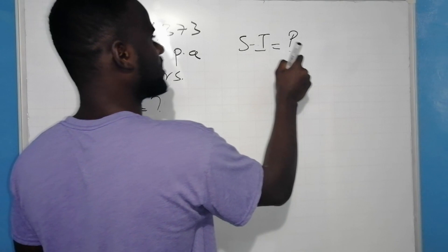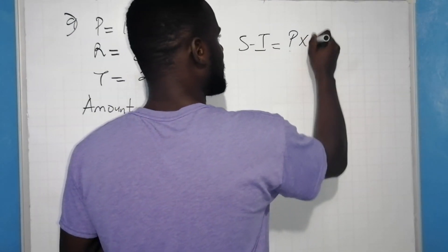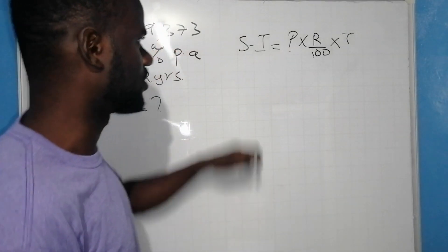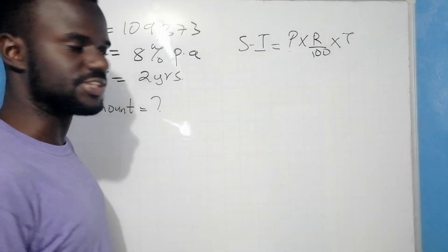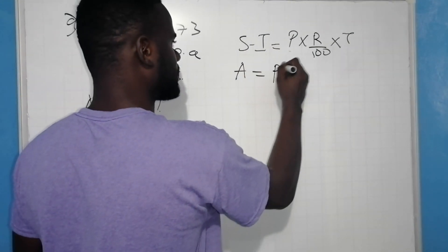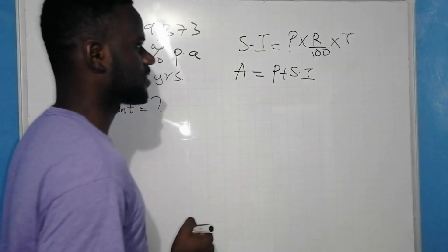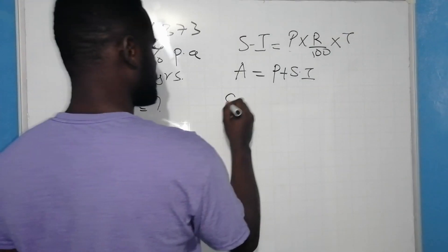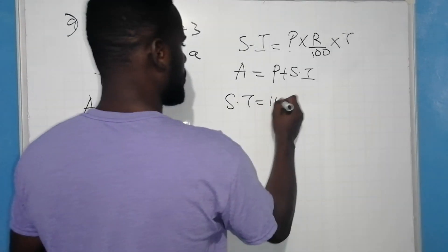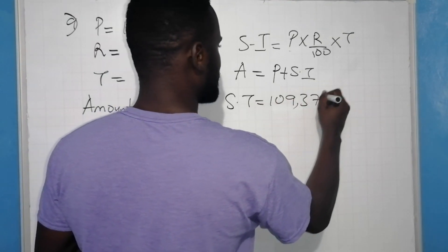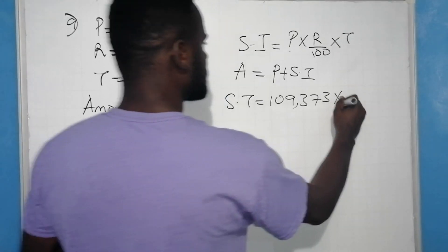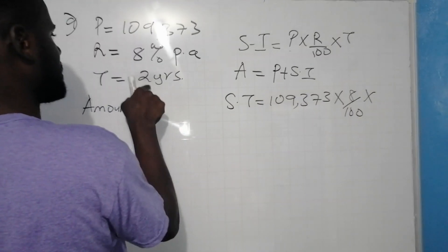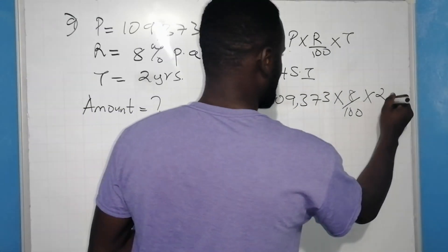The principal, which is the money invested or borrowed, times the rate, which is in percentage, times the time, which is the duration — this will give us the simple interest. The amount is simply the principal added to the simple interest. Let us calculate the first part: Simple Interest = 109,373 shillings × 8% per year × 2 years.